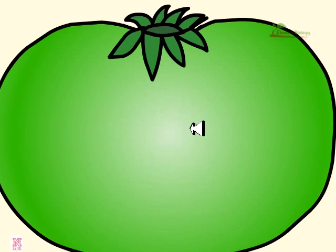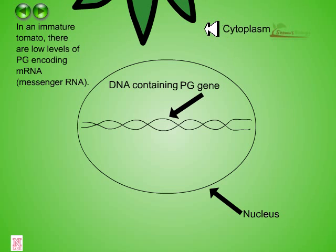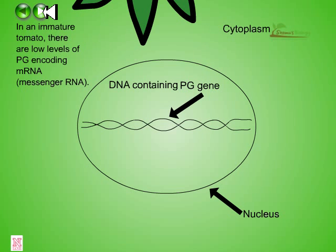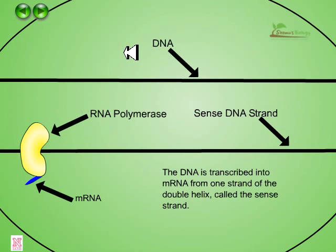The activity of PG increases during ripening and mainly degrades the pectin of the cell wall, thus changing the construction of the outer membrane. In an immature tomato, there are low levels of PG-encoding mRNA, which is the messenger RNA that codes for the PG protein, polygalacturonase.